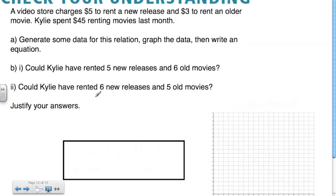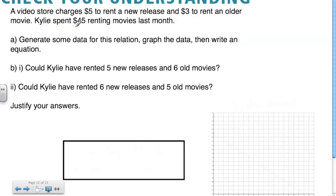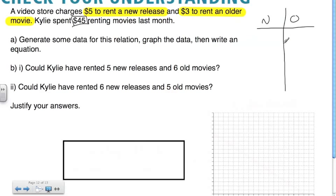Here's a question to try on your own. This isn't the same as in your handout — that one was a bit too difficult. You can use the same table, but try this question instead. It's a similar type: instead of $10 for peanuts and raisins, we have $45 to rent new and old video releases. New releases cost $5 and old releases cost $3. Create a table of values — N for new releases and O for old releases — generate a graph, write an equation in general form, then come back for the answer.